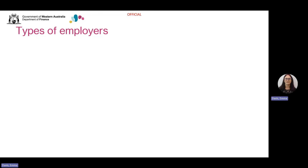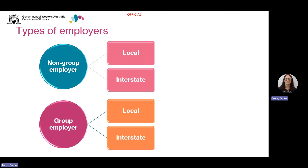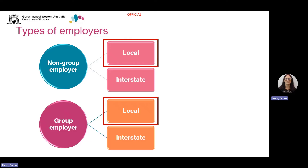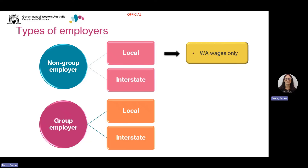The calculation of payroll tax varies depending on your employer registration status and frequency of lodging returns. An employer will be categorised and registered as one of the following: non-group employers and group employers. There are also two subcategories: local and interstate. A local non-group employer pays wages only in Western Australia and the employer is not a member of a group.